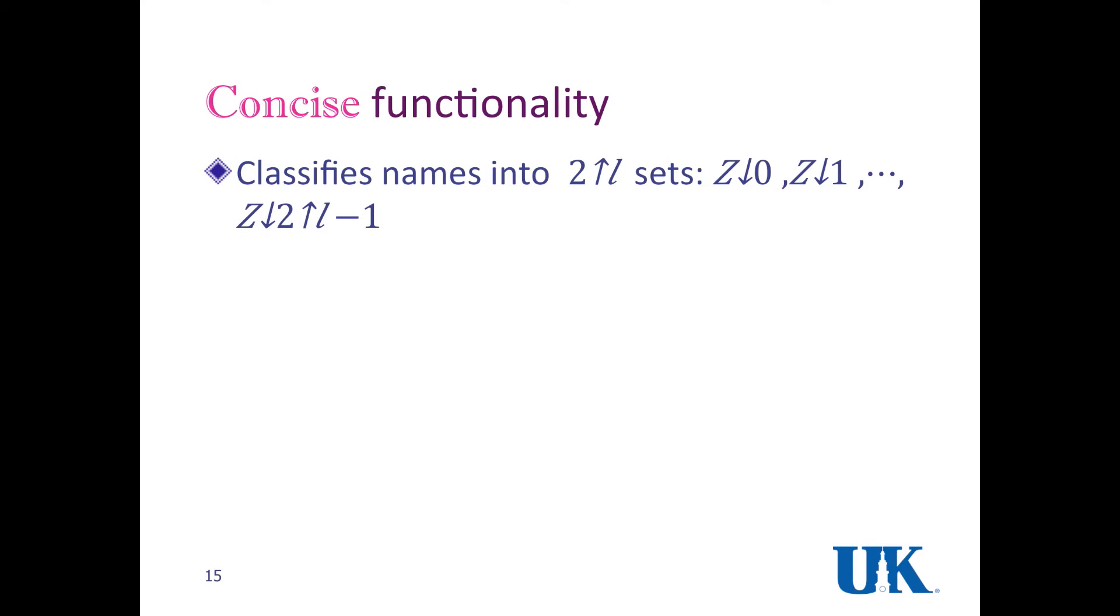But only classifying names to two sets is not enough. For a switch, we need to classify names to multiple sets. We support the classification of names into two power of L sets, which is like 0, 1, 0, 0, 0, 0, 0, that 1.